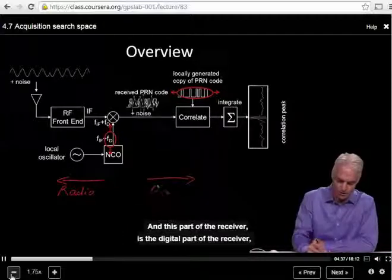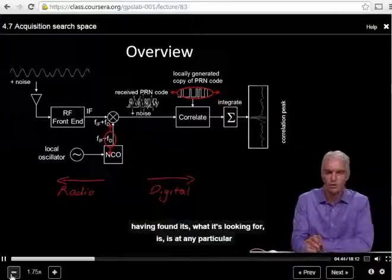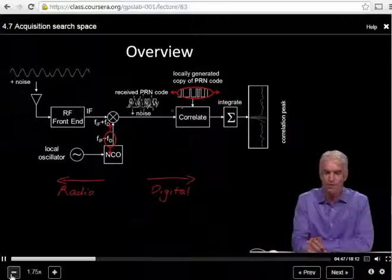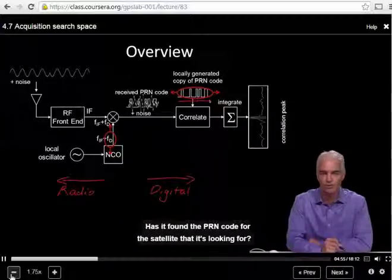And this part of the receiver is the digital part of the receiver. Think of this as the brains of the receiver, where having found what it's looking for at any particular frequency, has it found something that corresponds to what it's expecting? Has it found the PRN code for the satellite that it's looking for?